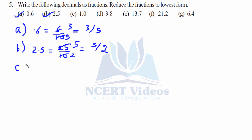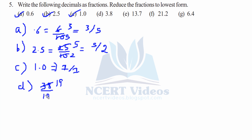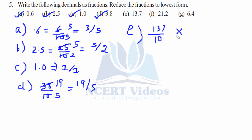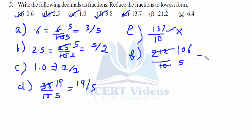Part C: 1.0 is ten over ten, or simply one. Part C is 3.8 — writing it as a fraction: 38 over 10, reduced by two gives 19 over 5 — not further reducible. Part D: 13.7 is 137 over 10 — not reducible. Part F: 21.2 is 212 over 10, reduced by two gives 106 over 5.